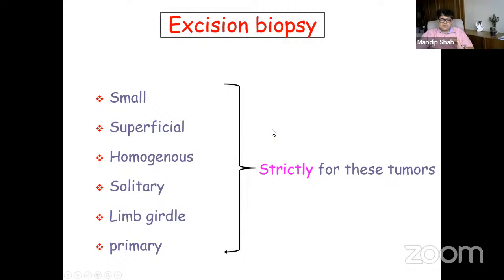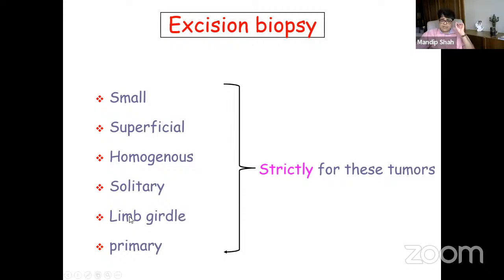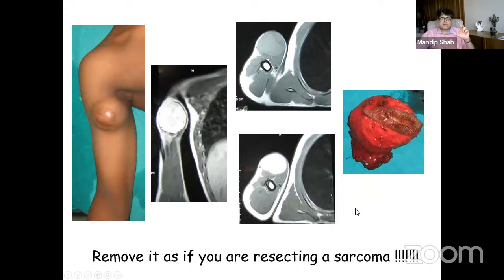Excision biopsy should not be done by a non-tumor surgeon — that is a dictum. You should always do a biopsy before surgery. For someone who deals with tumors only occasionally, excision biopsy is restricted to: small, superficial, homogeneous, solitary tumors in the limb girdle, not in the appendicular or axial skeleton, and only primary lesions, not recurrences. Even when doing an excision biopsy on something you are sure is benign, remove it as if you are resecting a sarcoma — with wide margins — and do not take a chance.